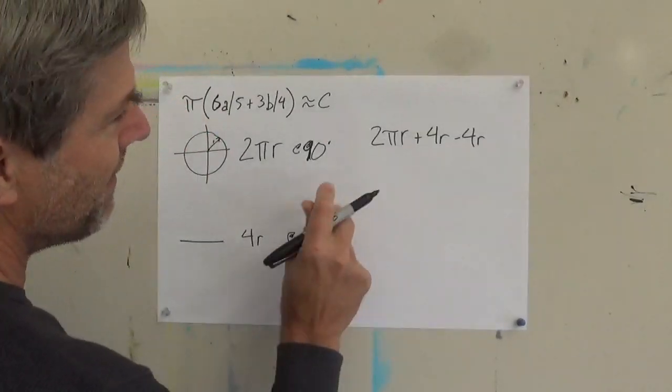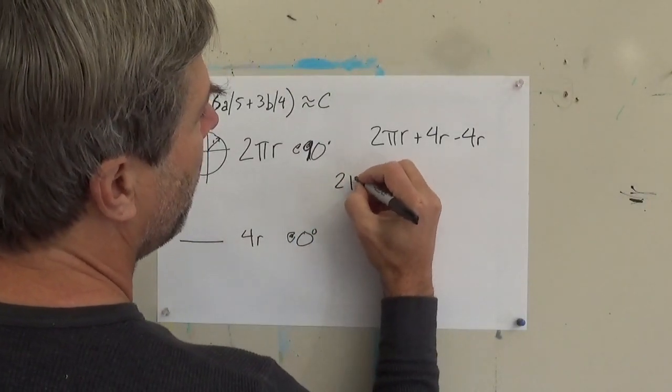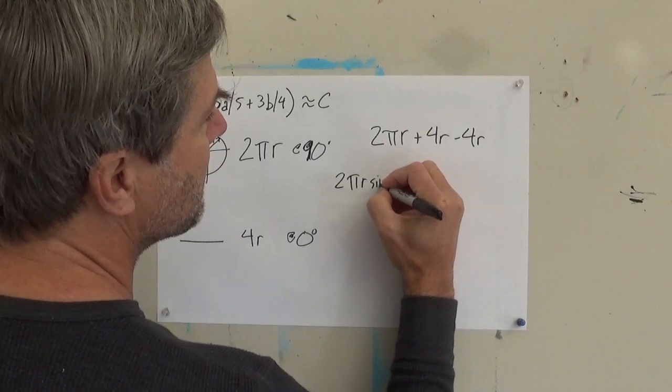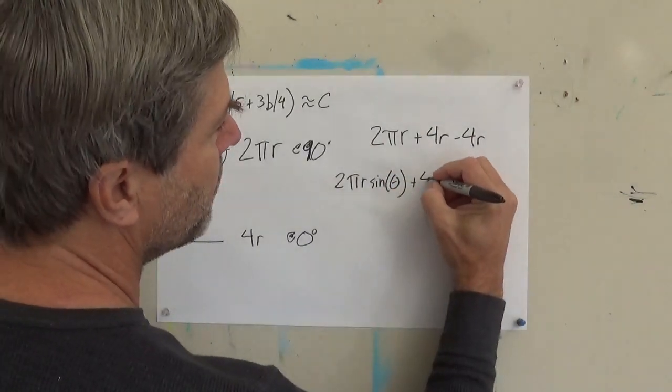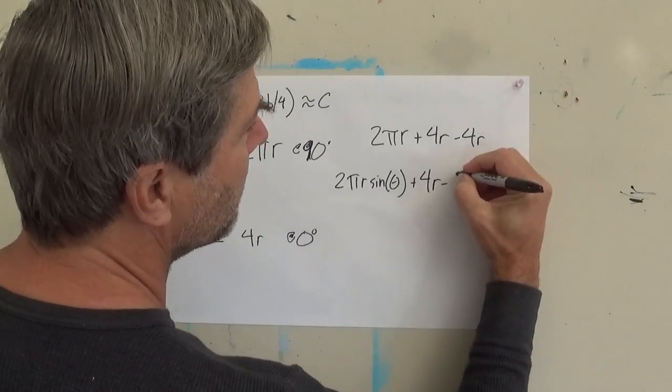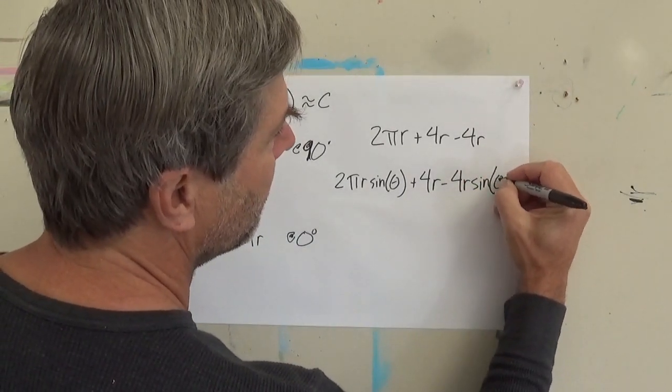So if instead of this as my formula, I write 2 pi r times sine theta plus 4 r minus 4 r times sine theta.